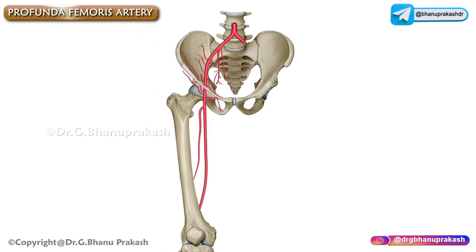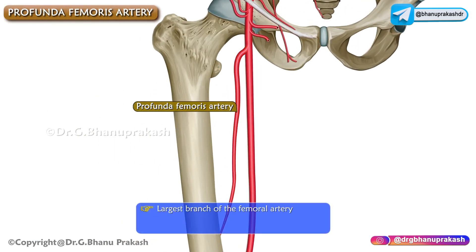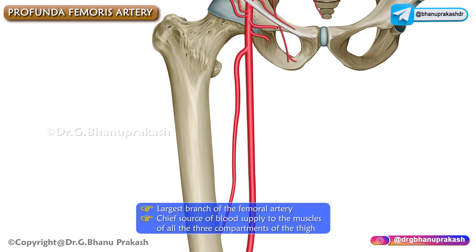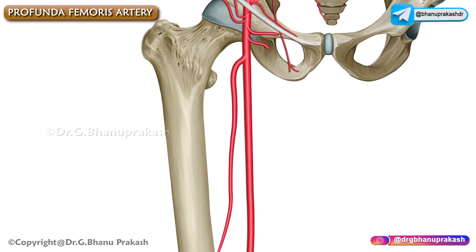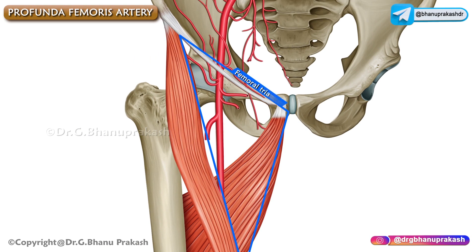The profunda femoris artery is the largest branch of the femoral artery and is the chief source of blood supply mainly to the muscles of all three compartments of the thigh. As you can see in this picture, it arises from the lateral side of the femoral artery in the femoral triangle, four centimeters below the inguinal ligament.